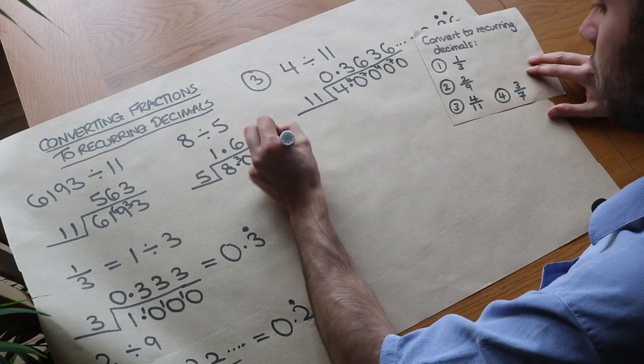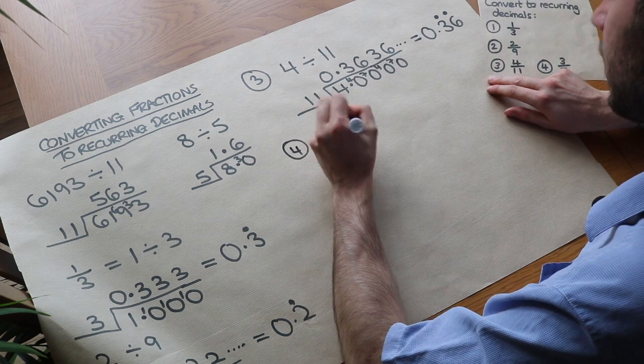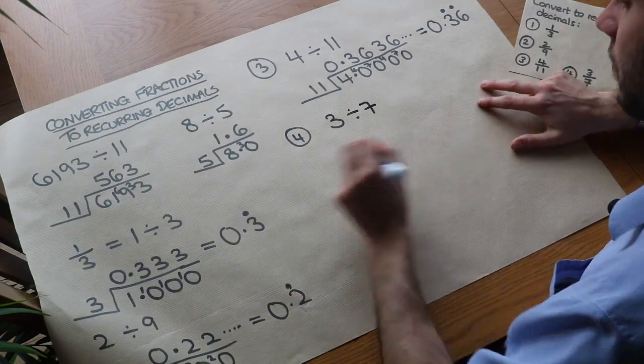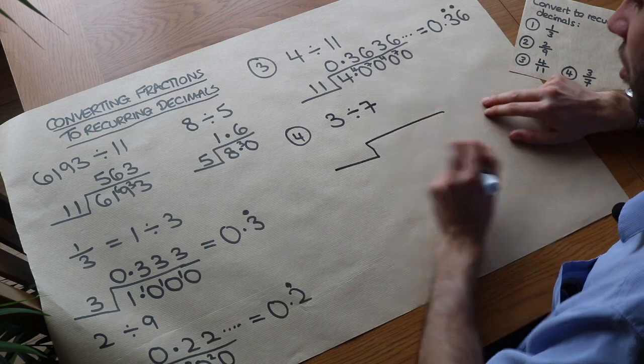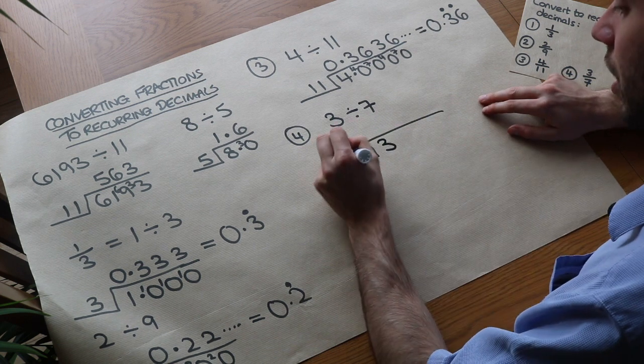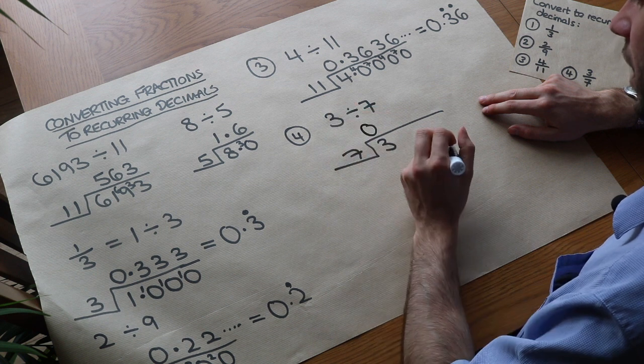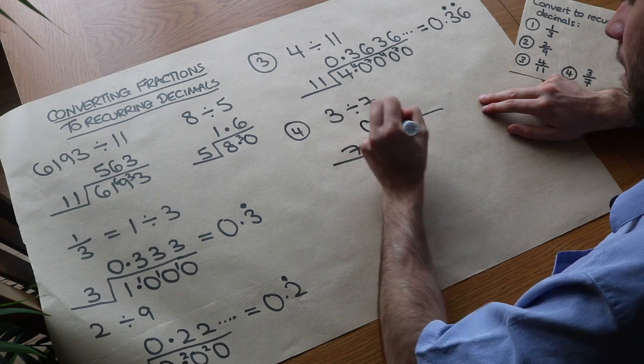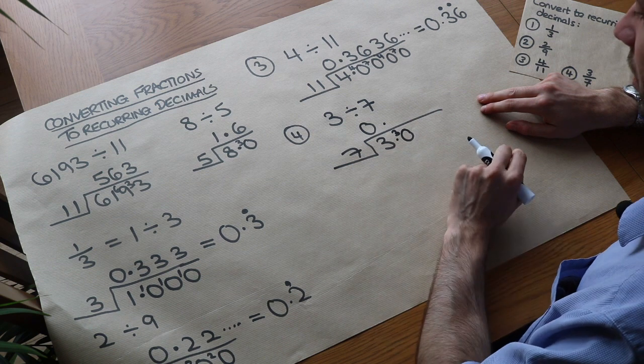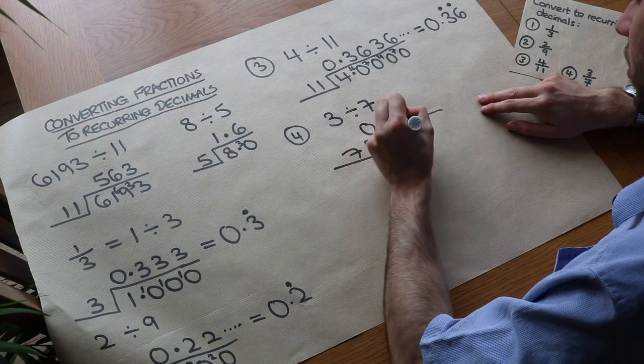What about the fourth one? We've got 3 sevenths. So that's 3 divided by 7. So this one goes on for much longer. So we're doing 3 divided by 7. How many times does 7 go into 3? 0 times remainder 3. Put the remainder 3 there. How many times does 7 go into 30? 4 times remainder 2.